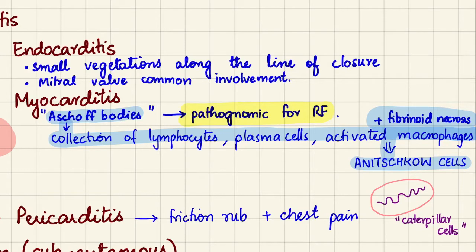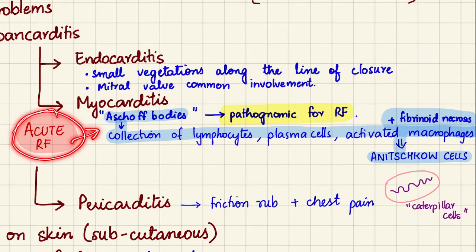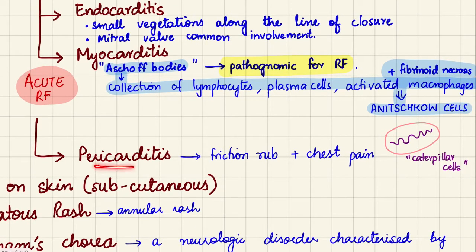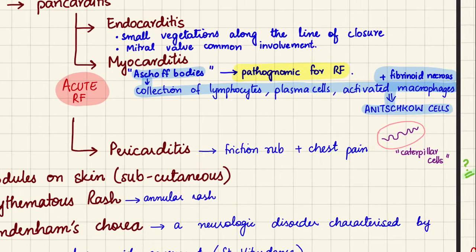The activated macrophages in Aschoff bodies are called Anitschkow cells, also known as caterpillar cells because the nucleus is condensed into a spiral shape like a caterpillar. These are seen in acute rheumatic fever but not in chronic rheumatic fever. In pericarditis, inflammation causes friction rub — a sound heard when both pericardial layers rub against each other — and chest pain due to the innervation of the pericardium.